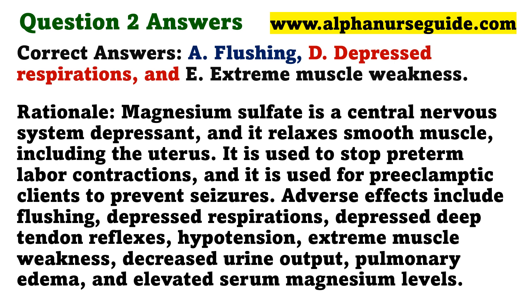Rationale: Magnesium sulfate is a central nervous system depressant and it relaxes smooth muscle, including the uterus. It is used to stop preterm labor contractions and is used for preeclamptic clients to prevent seizures. Adverse effects include flushing, depressed respirations, depressed deep tendon reflexes, hypotension, extreme muscle weakness, decreased urine output, pulmonary edema, and elevated serum magnesium levels.